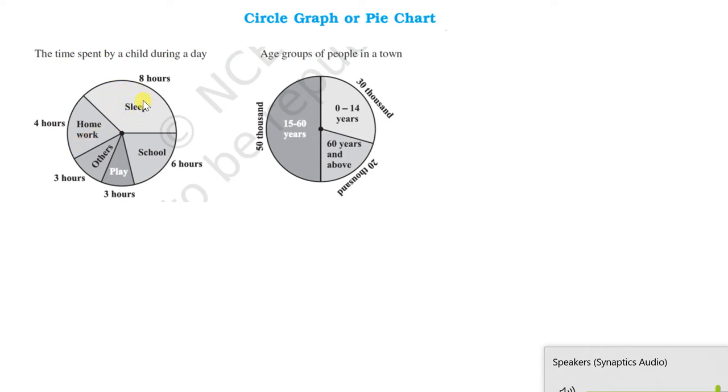For sleeping, he has spent eight hours. For doing homework, four hours. For others, three hours. For playing, three hours. In school, he has spent six hours. What are we showing here? We are showing a part of 24 hours in different activities.